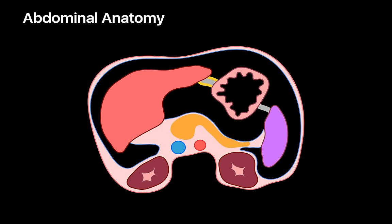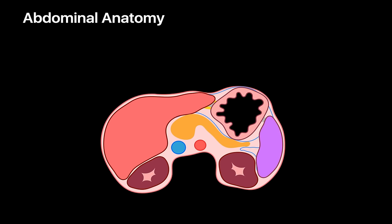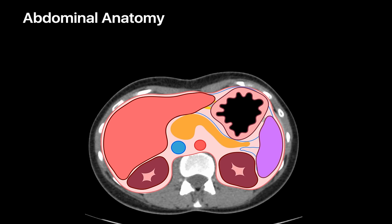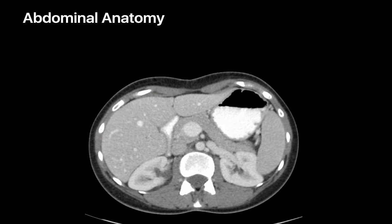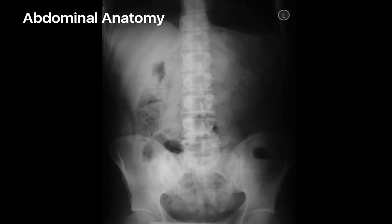The interpretation of abdominal CTs and x-rays would be easier if the peritoneal cavity were inflated with air like on these diagrams, with organs nicely separated. However, in real life the peritoneal cavity is air-free, which is why understanding each compartment's boundaries is important when interpreting an abdominal CT or x-ray.